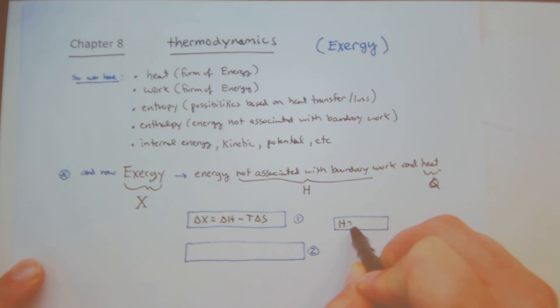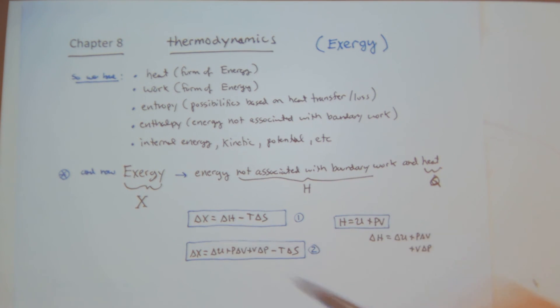Likewise, I had H is equal to U plus PV. So I can use this. Delta X is equal to, of course, delta H is equal to delta U plus P delta V plus V delta P. So I can just plug this into here. I got delta U plus P delta V plus V delta P minus T delta S. So two different expressions for the change in X or G.